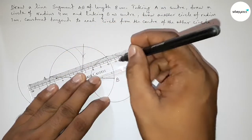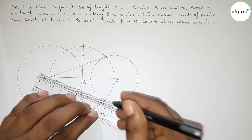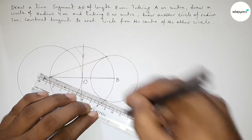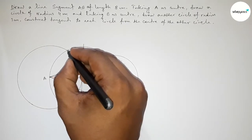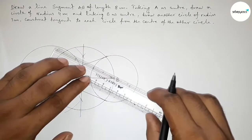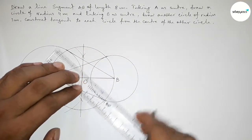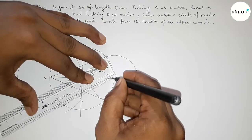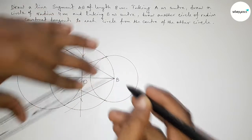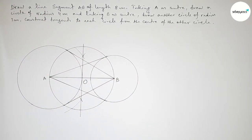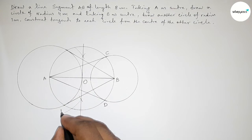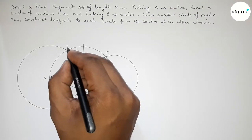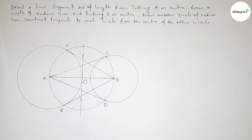Now drawing two tangents from center O to the circle at A, joining these tangent lines. Next, from center B, drawing two tangents to the circle at A, and joining these as well. Taking the points of tangency as C, D on the circle centered at A, and E, F on the circle centered at B. These are the four tangents.